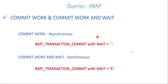So the key difference: commit work is always asynchronous, but BAPI transaction commit has the option of being either asynchronous or synchronous. Whenever a program is designed using a BAPI, you should use BAPI transaction commit afterwards. Since BAPI is remote-enabled and calls can come from other systems, it is generally better to use the synchronous process — wait and get the response — but it still depends on your business need.